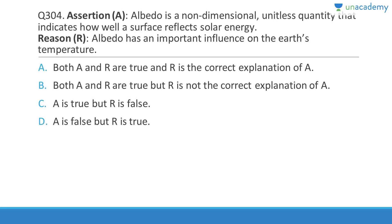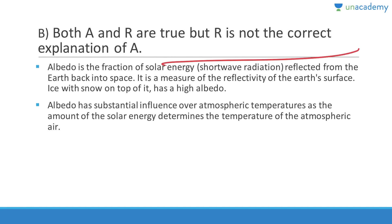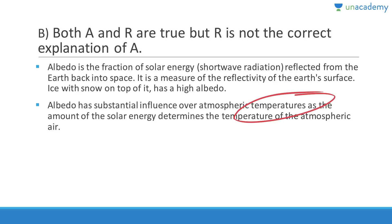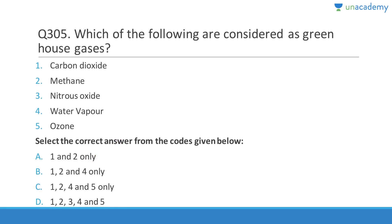Question 304 (Assertion-Reason): Albedo is a non-dimensional, unitless quantity — a percentage of how well a surface reflects solar energy. This assertion is correct. Albedo has an important influence on Earth's temperature — also correct, but this reason is not the correct explanation of the assertion. Answer is B. Albedo is the fraction of solar energy reflected from Earth back into space; ice with snow has high albedo.